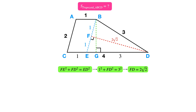In the parallelogram, AB equals 1, so CE is also equal to AB, which is 1. GD is equal to CD minus CG, which equals 4 minus 1, resulting in 3. And BD is also 3.